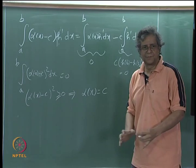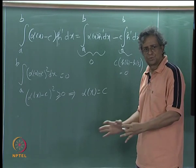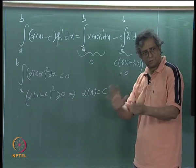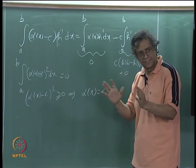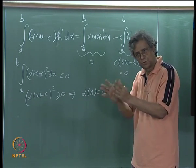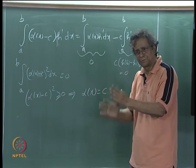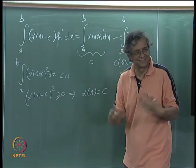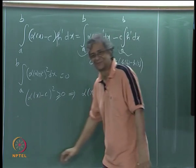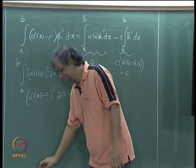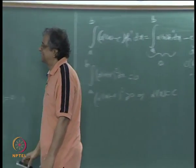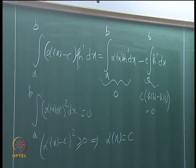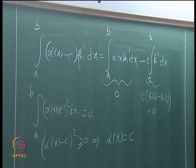We get the integral from A to B of (alpha(x) − C)² dx = 0. Since (alpha − C)² is non-negative, and its integral is 0, the integrand itself must be 0 everywhere — therefore alpha(x) equals C, identically a constant. When reading these theorems, it always helps to look at it as a conversation.